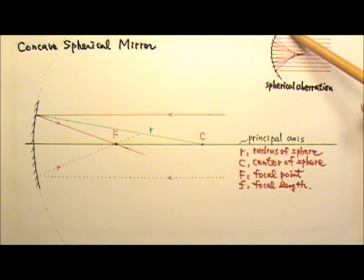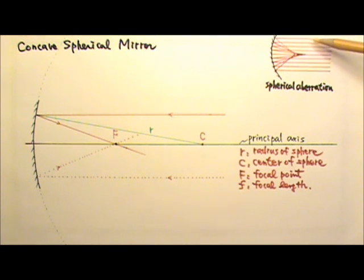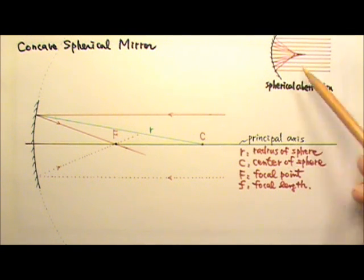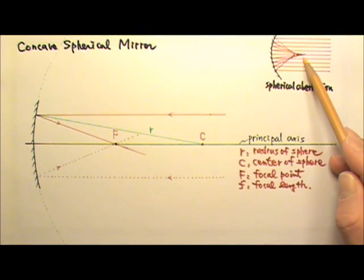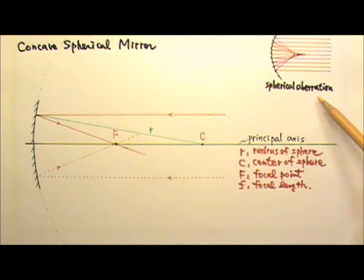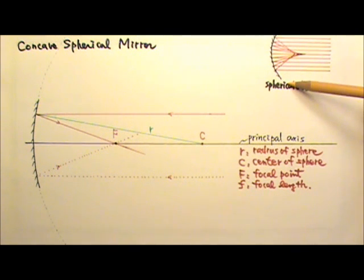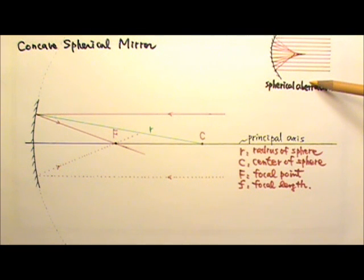Actually, for a real spherical mirror, paraxial rays don't focus at a single focal point. The rays farther away from the principal axis meet closer to the mirror, and those rays closer to the principal axis meet farther away from the mirror. So images formed by spherical mirrors are sort of distorted — that is called spherical aberration. If we use curved mirrors that are parabolic in shape, all paraxial rays would really focus at a single focal point, so good reflective telescopes or satellite dishes use parabolic mirrors.